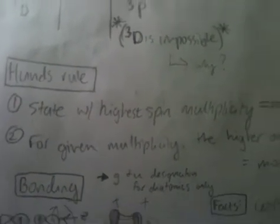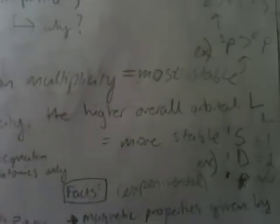Hund's rule, two rules stating which is the most stable. Bonding, what does bonding look like? What do these terms Gerard and un-Gerard mean? And some facts about the magnetic properties of unpaired electrons and lack of magnetic properties for paired electrons.